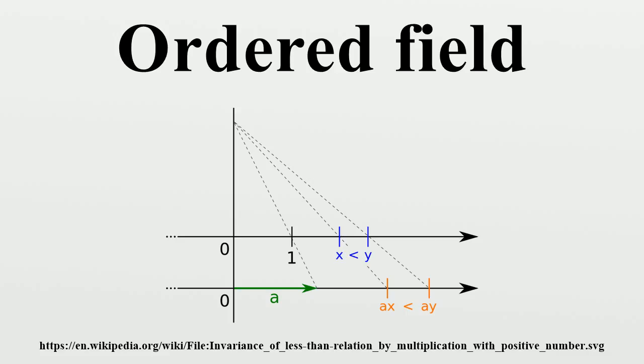Any Dedekind-complete ordered field is isomorphic to the real numbers. Squares are necessarily non-negative in an ordered field. This implies that the complex numbers cannot be ordered since the square of the imaginary unit i is minus one.